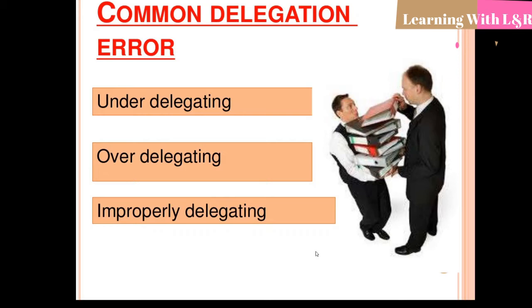Common delegation errors come in three kinds: under-delegating, over-delegating, and improperly delegating. Under-delegating means the head of the team gives subordinates less work than required. Over-delegation means all work is given to the subordinate improperly, without knowing each person's weaknesses or strengths regarding the particular task.